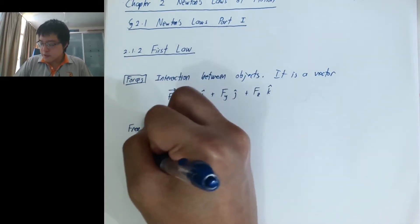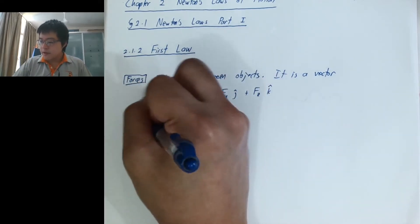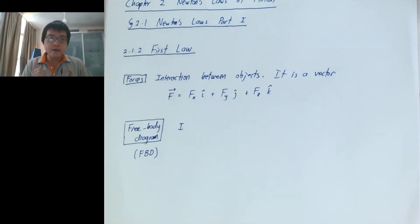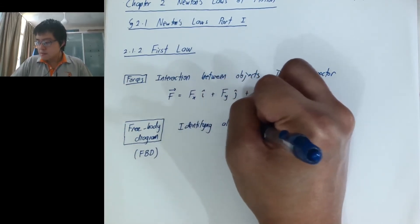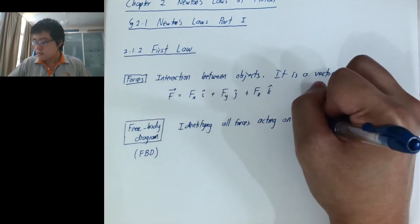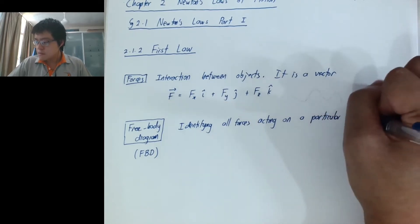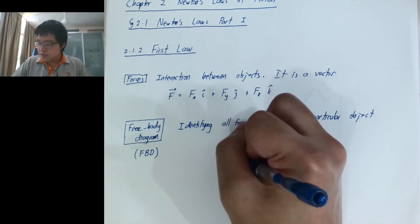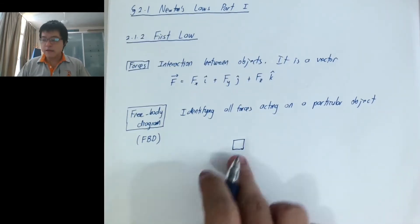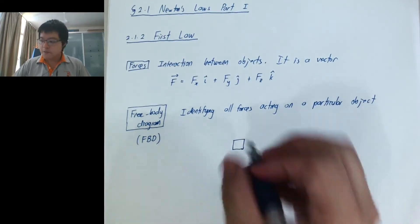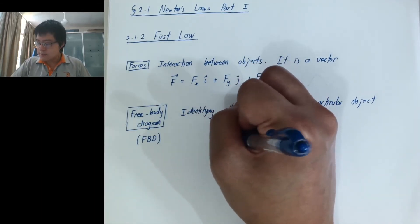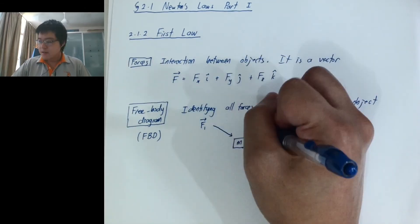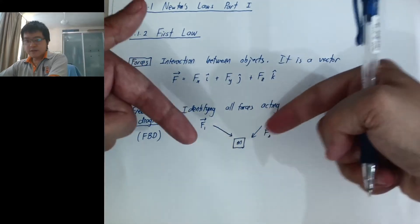We'll call this FBD for short. A free body diagram is about identifying all the forces acting on a particular object only — this is important, on a single object only. Usually the object we study is a box or a point particle, something small where we don't care about its size or shape yet. It has some mass m and we want to figure out the forces acting on it.